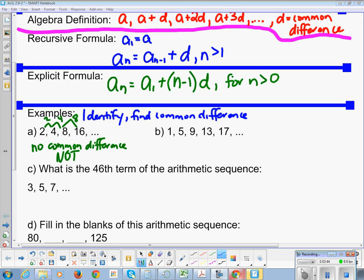For B, we have 1, 5, 9, 13, 17. So 5 plus 4 is 9, and 9 plus 4 is 13, and 13 plus 4 is 17. So in this case, yes, it's arithmetic, and our common difference is 4.